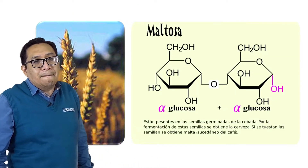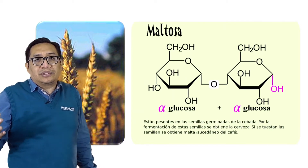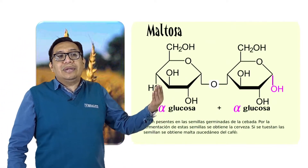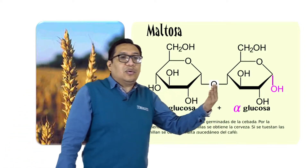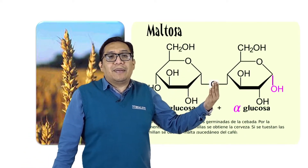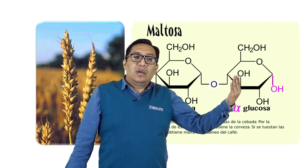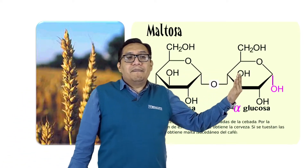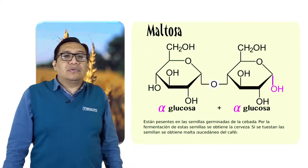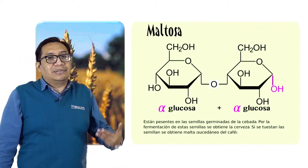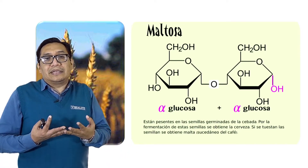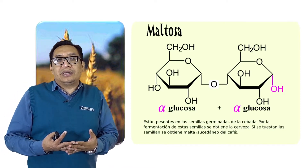Tenemos en primer lugar a la maltosa, llamada también azúcar de malta. La maltosa está formada por dos unidades de glucosa, dos glucosas unidas una frente a otra, con un enlace glucosídico llamado alfa-1,4. Glucosa más glucosa mediante enlace glucosídico alfa-1,4. La maltosa la encontramos en los cereales, en el trigo, en la cebada, en la avena, etc., y se usa como fuente de fermentación, por ejemplo, en la industria que produce cerveza.